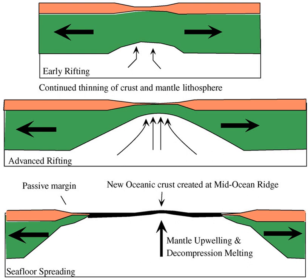Different kinds of transitional crust form depending on how fast rifting occurs and how hot the underlying mantle was at the time of rifting. Volcanic passive margins represent one endmember transitional crust type; the other endmember is the rifted passive margin. Volcanic passive margins are also marked by numerous dikes and igneous intrusions within the crust, causing lava flows along the top of the subsided continental crust and forming seaward dipping reflectors.